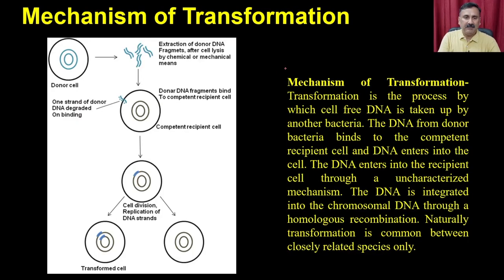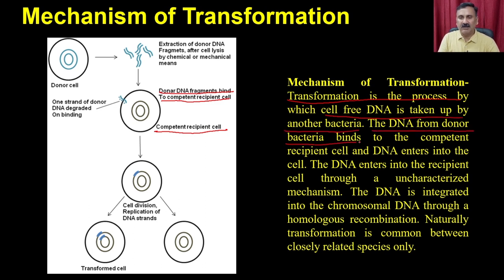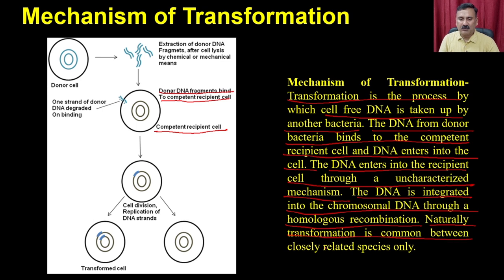The donor cell releases a DNA fragment with antibiotic resistance genes into the extracellular media, which then interacts with competent recipient cells. The donor DNA fragment binds to the competent recipient cells and is taken up. The mechanism of transformation is the process by which cell-free DNA is taken up by another bacterium. The DNA enters the recipient cell through an uncharacterized mechanism and is integrated into chromosomal DNA through homologous recombination. Naturally, transformation is common between closely related species.